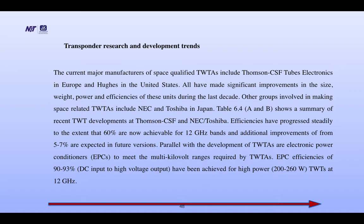Transponder research and development trends: the current major manufacturers of space-qualified TWTAs include Thomas CSF Tube Electronics in Europe and HAGS in the United States. All have made significant improvements in the size, weight, power, and efficiency of these units during the last decade. Other groups involved in making space-related TWTAs include NEC and Toshiba in Japan. A summary of TWTA development at Thomas CSF and NEC Toshiba shows that efficiency has progressed steadily to the extent that 60% is now achievable for 12 GHz bands.